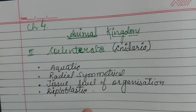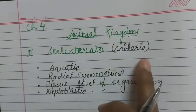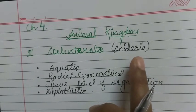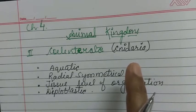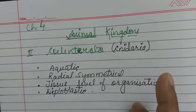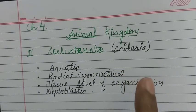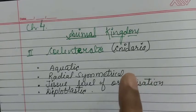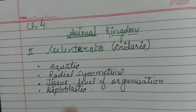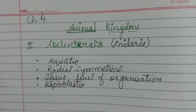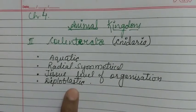They are called Cnidaria because cnidoblast or cnidocyte cells are present in them, found on the tentacles. These cnidoblast cells are used for defense, capturing prey, and anchoring the body. Their respiratory system, excretory system, and blood circulatory system are all absent.